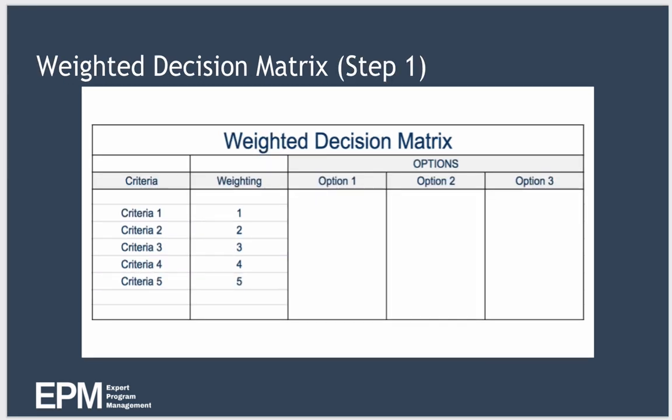Just as we did in our simple decision matrix, we create a table and in the leftmost column list the criteria against which you wish to evaluate your options. To the right of this column we create another column specifying the weighting or relative importance of each of the criteria using some kind of scale. For example, here we've used the scale of one to five, where one is of little importance and five is a very important criteria.